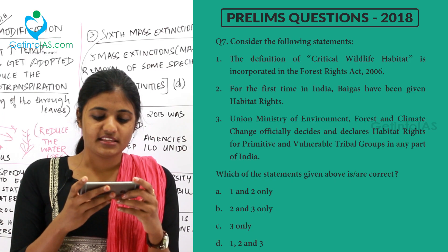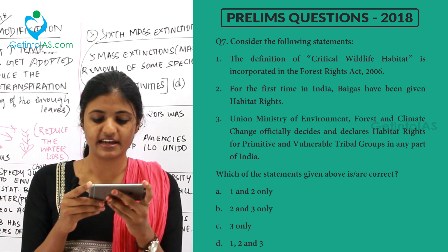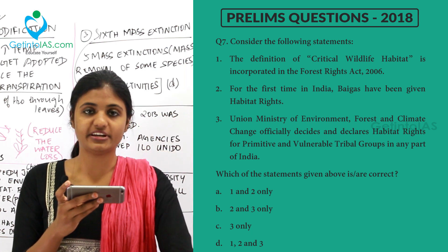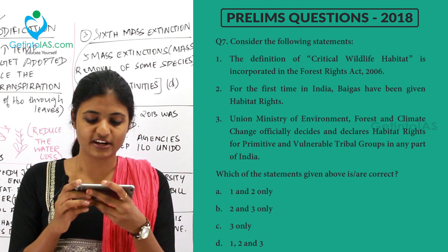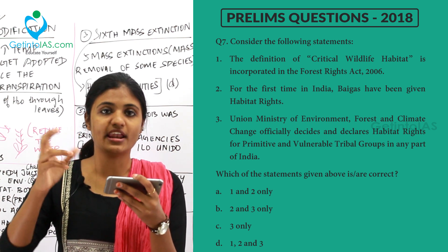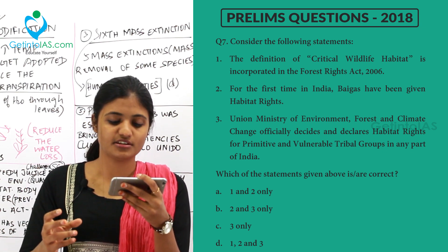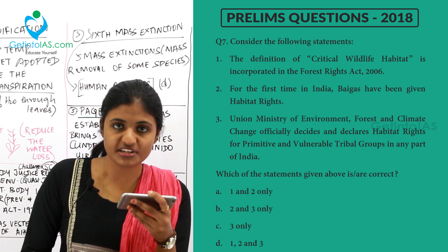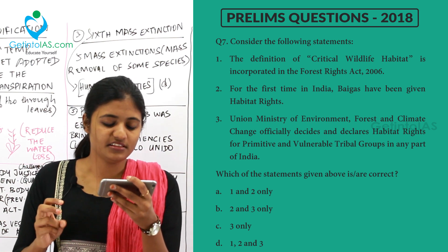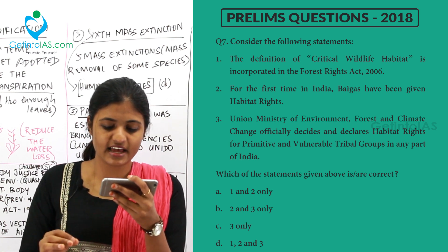The next question asks to consider the following statements. First: the definition of critical wildlife habitat is incorporated in the Forest Rights Act 2006 — yes, it is definitely mentioned there. Second: for the first time in India, Baighas have been given habitat rights — the Baighas are tribes in Madhya Pradesh who recently received habitat rights.